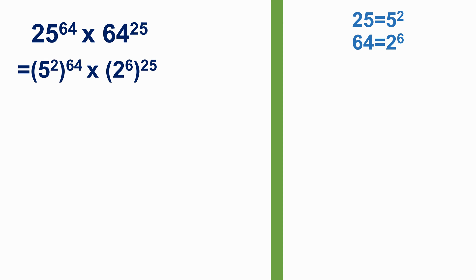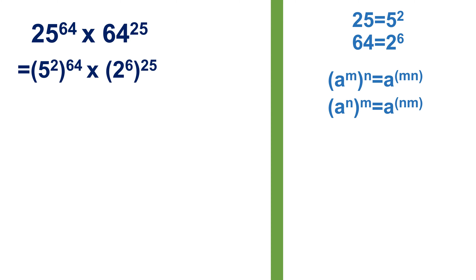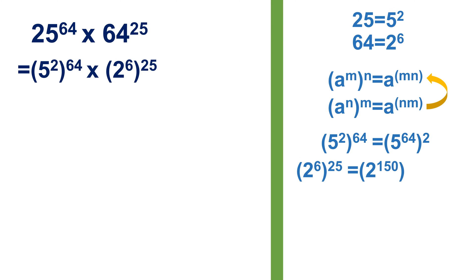We know that a to the power m, to the power n, equals a to the power mn. Similarly, a to the power n to the power m equals a to the power mn — they are the same. This means we can also write 5 squared to the power 64 as 5 to the power 64, squared. As for 2 to the power 6 to the power 25, it can be written as 2 to the power 150, which can again be written as 2 to the power 75, squared.